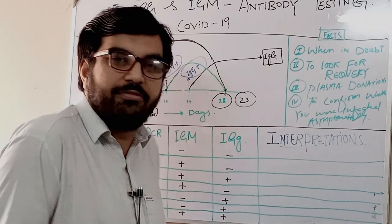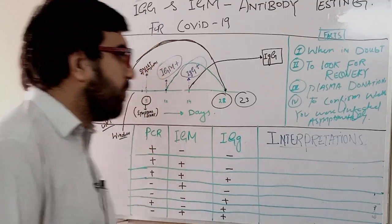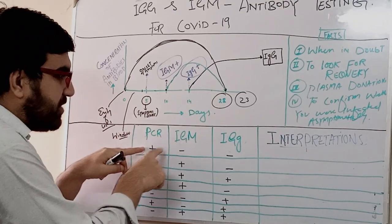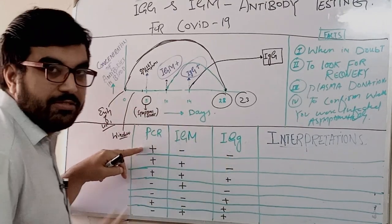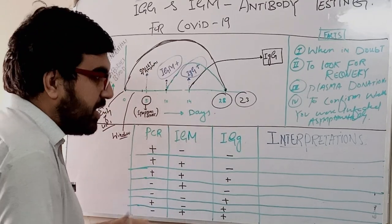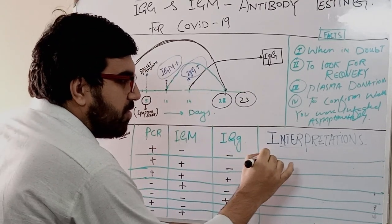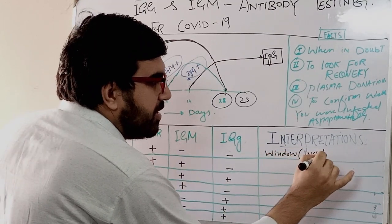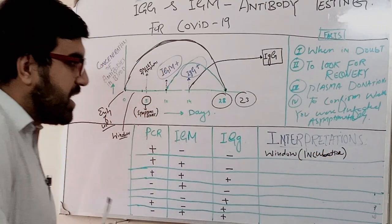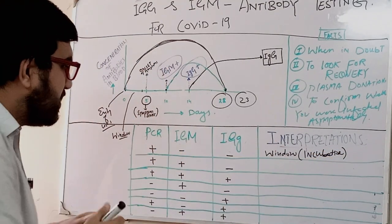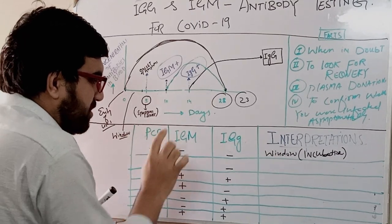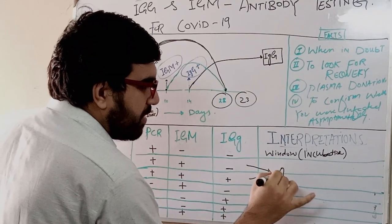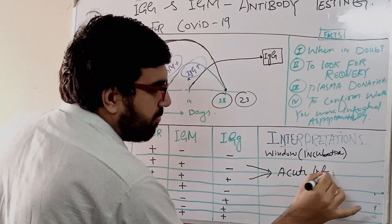Now the main interpretation: When PCR is positive, IgM is negative, and IgG is negative — this shows the person is in the window period or incubation period. When PCR is positive and IgM is positive with IgG negative, or when all three are positive — both indicate acute infection.